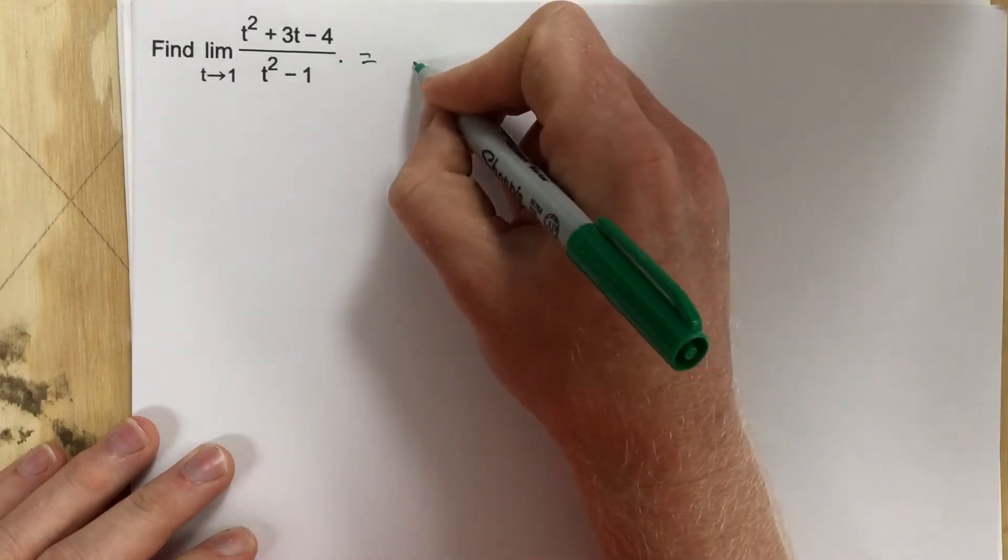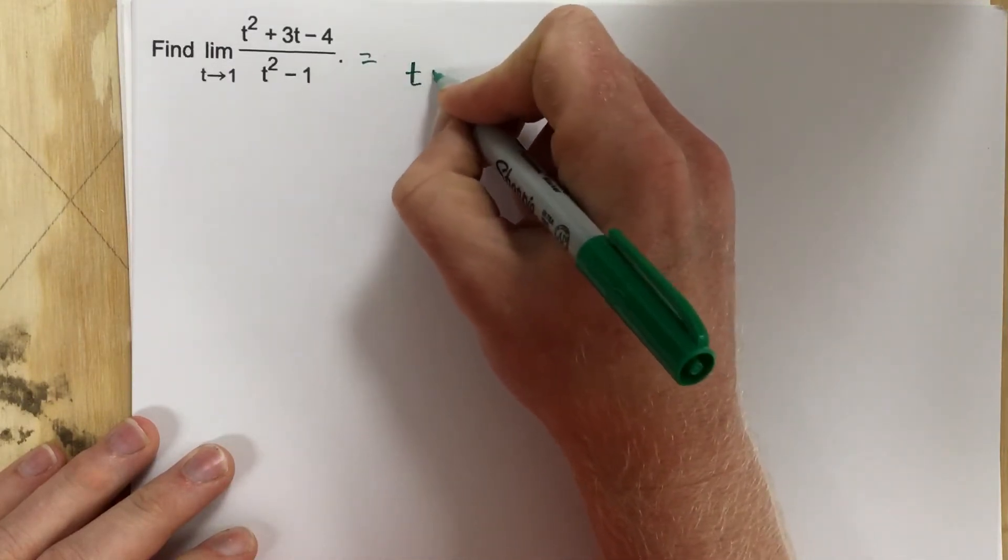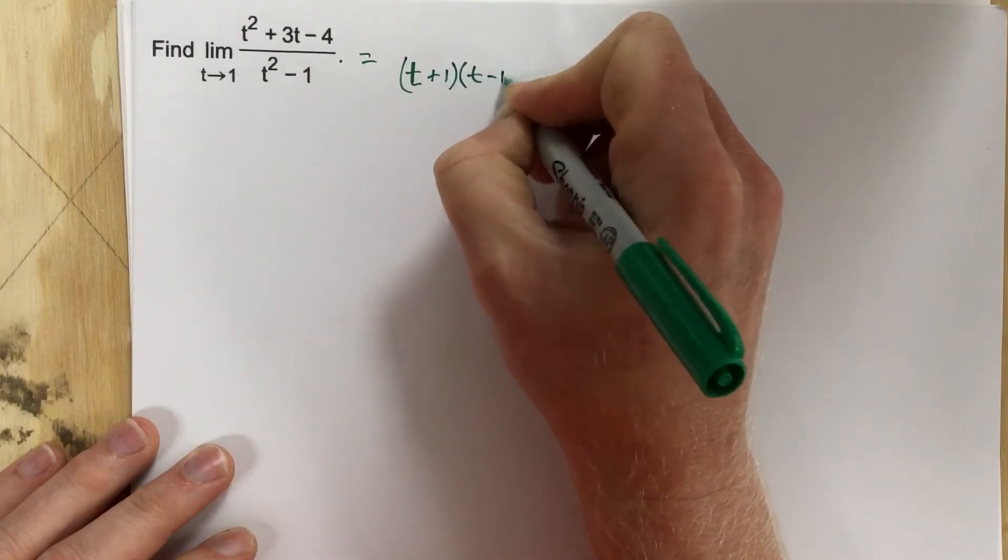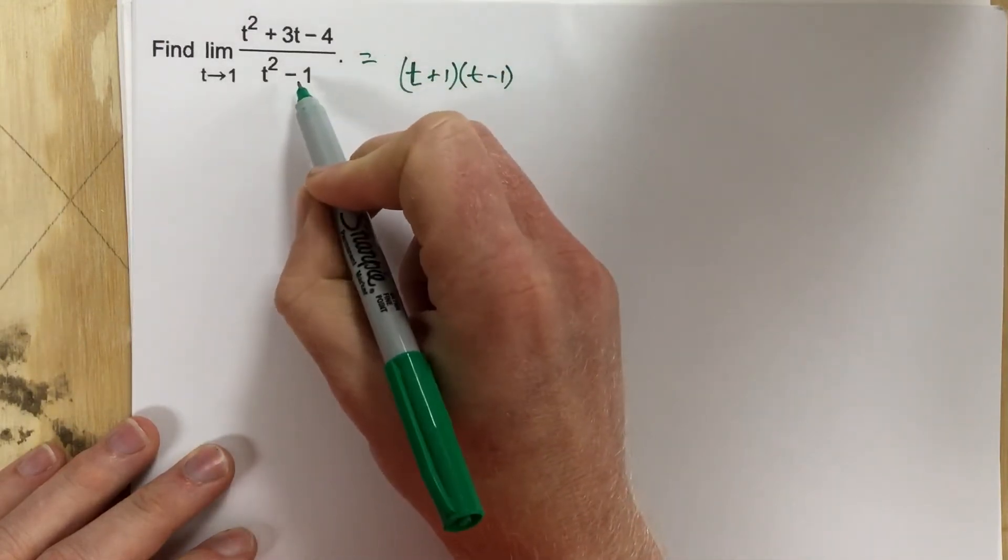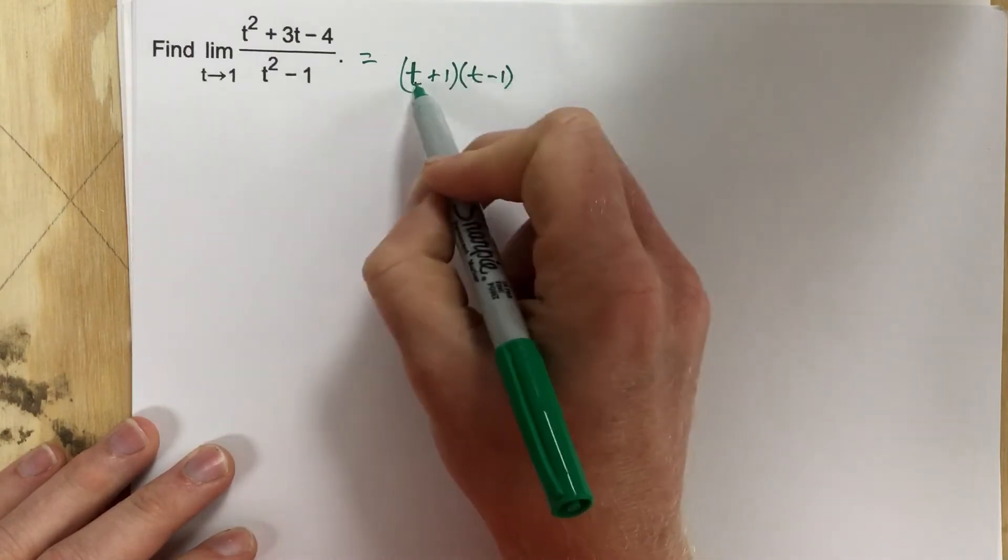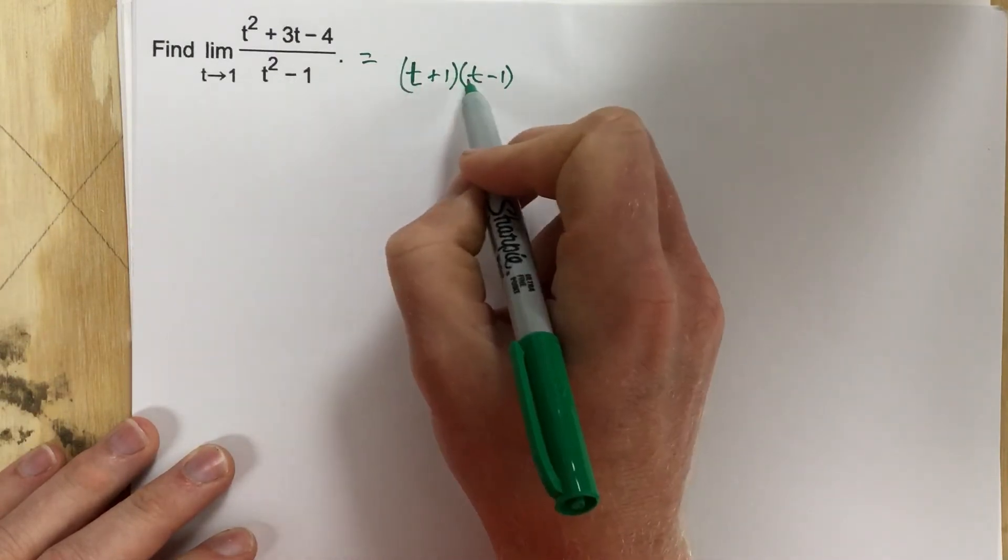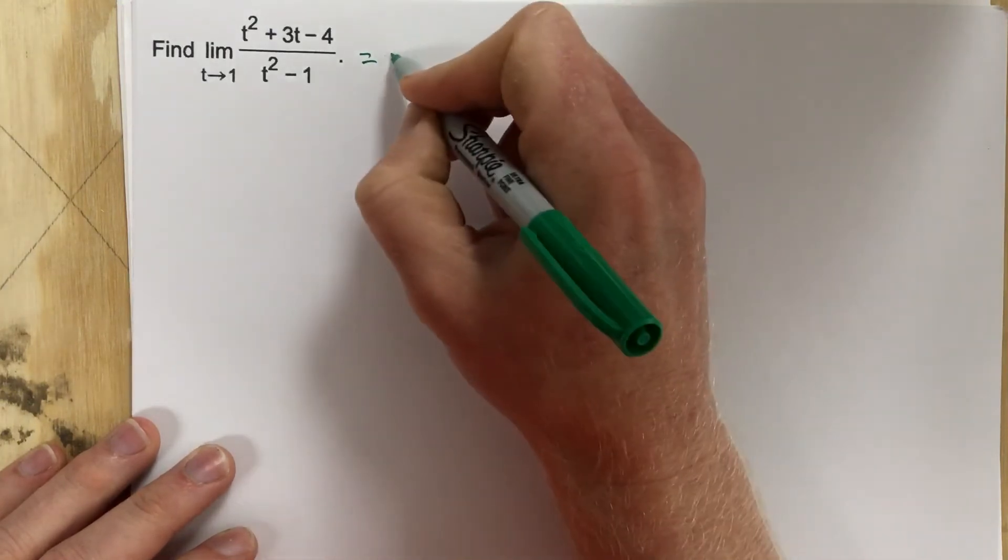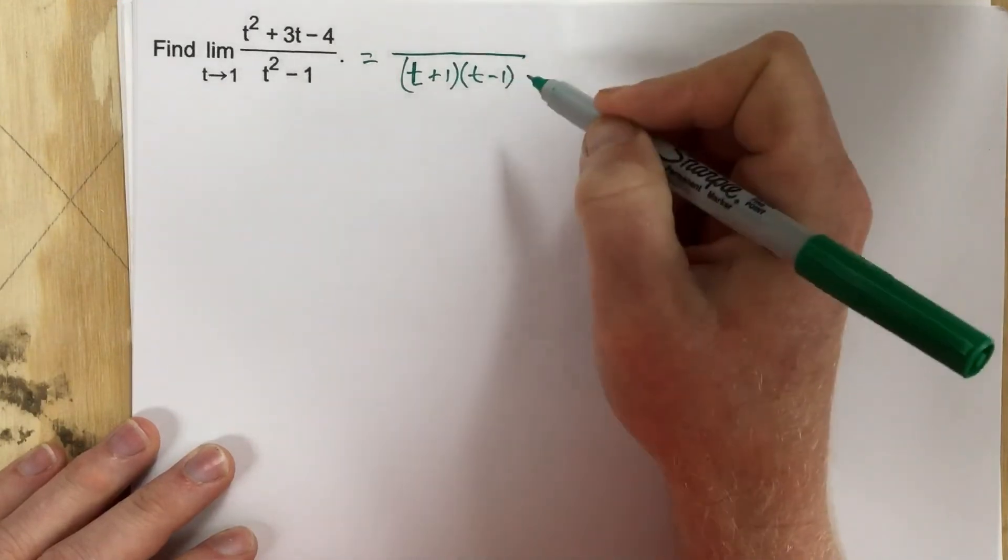So this will actually be t plus 1 times t minus 1, right? Because obviously 1 times negative 1 is negative 1, and t times t is t squared, and then obviously 1 times t and negative 1 times t cancel out. So this factored to t plus 1 times t minus 1.